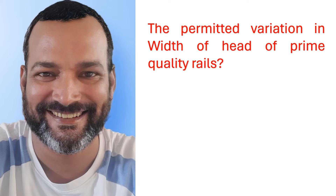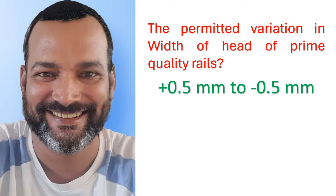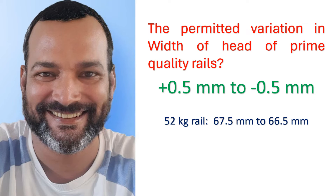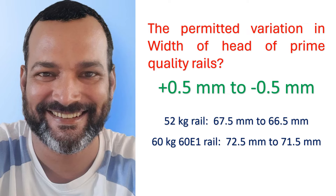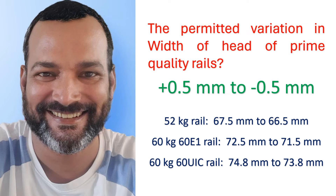The permitted variation in width of head of prime quality rail is +0.5 millimeter to -0.5 millimeter. For example, for the 52 kg rail the range is 67.5 mm to 66.5 mm. For 60 kg even rail the range will be 72.5 mm to 71.5 mm, and for 60 kg UIC rail it will be 74.8 mm to 73.8 mm.